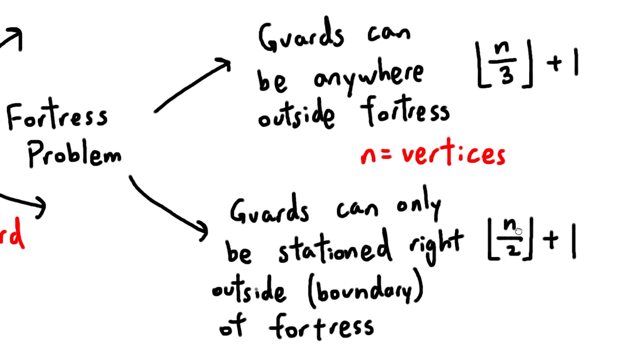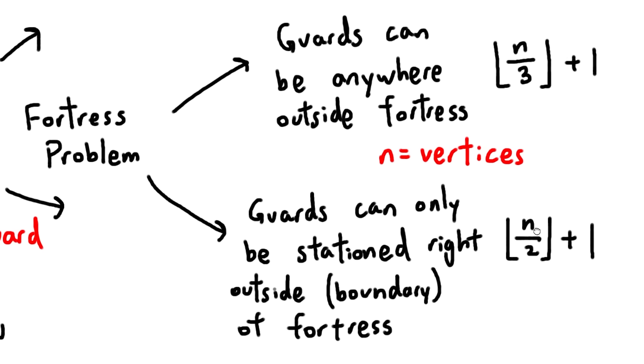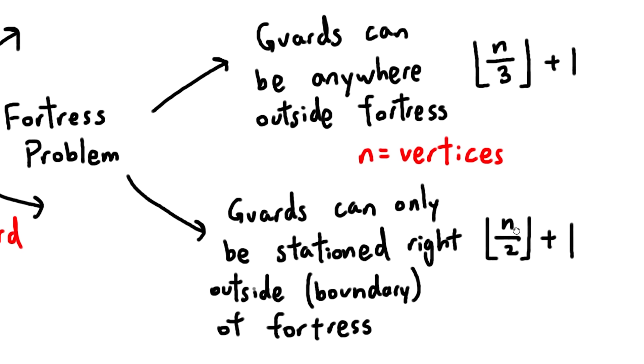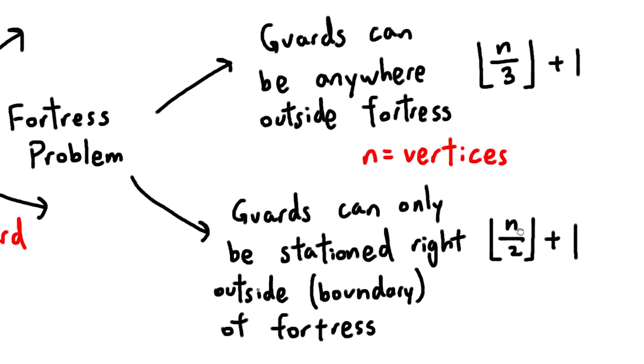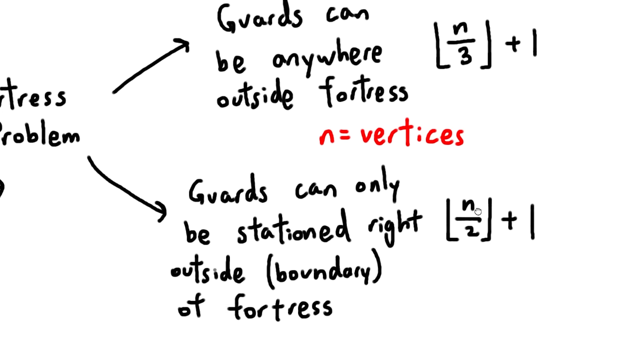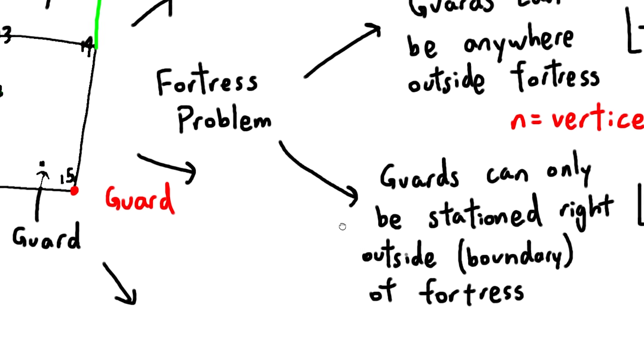This weird bracket thing is called the floor function, and it's the largest integer that's less than that number. For example, the floor of 5.5 is equal to 5. You basically just remove the fractional part of the number.